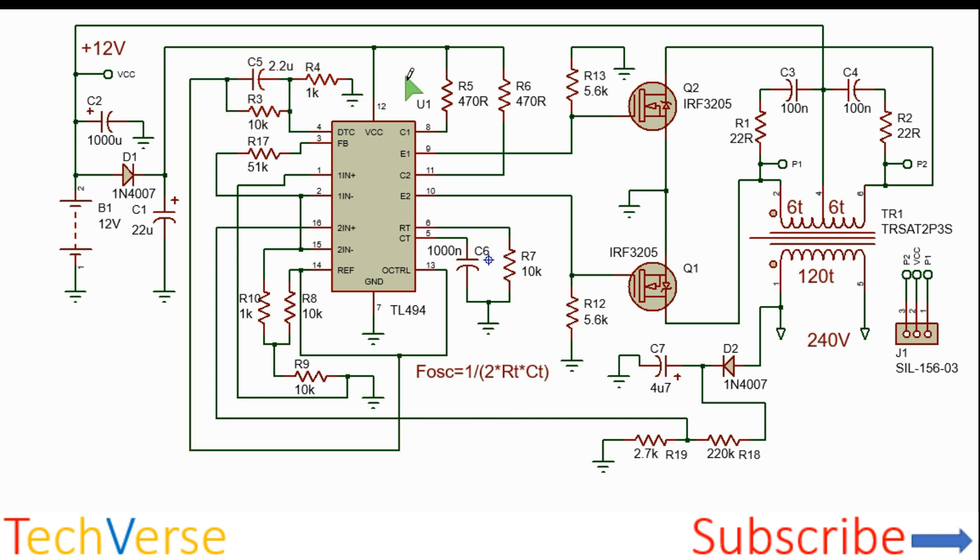So this section here is known as soft start, whereby the dead time pin receives 5 volts when the IC is immediately turned on, so the output PWM is zero. But as this capacitor charges, the voltage at the dead time control pin will reduce to almost zero, and so this will allow the output PWM to gradually increase. This reduces the stress imposed on the output transistors when the inverter starts operating.